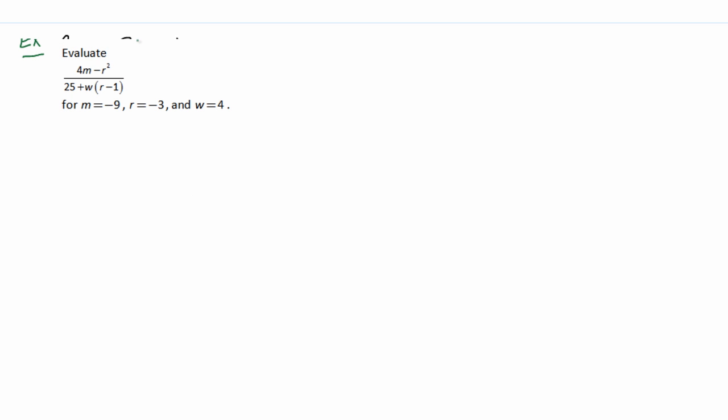The first thing we're going to do is substitute in the values for M, R, and W that are given to us. When I do this, I generally rewrite my original algebraic expression with parentheses where there were variables. This just guarantees that I'm not going to make a mistake. Inside the parentheses next to the 4, we'll replace that with what M should be, which is negative 9.